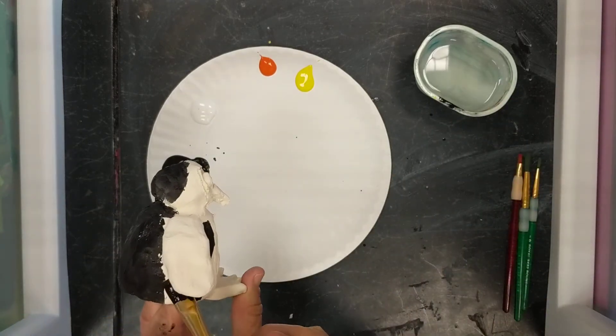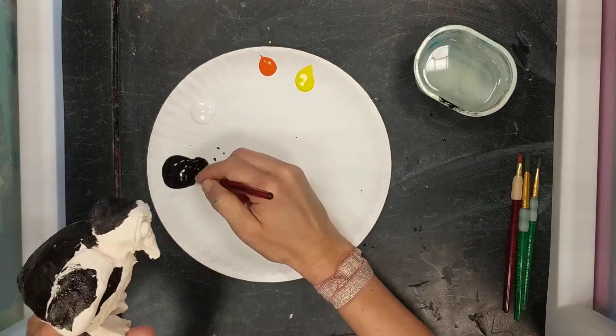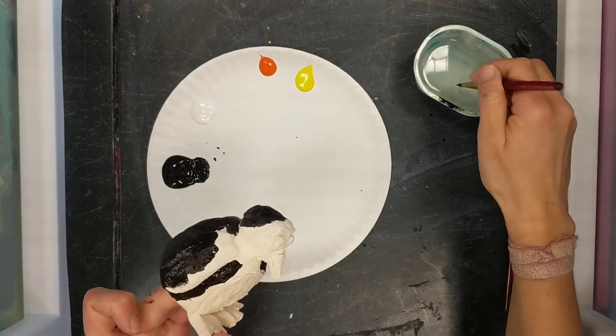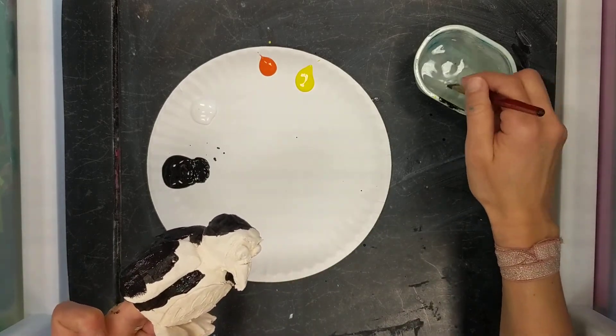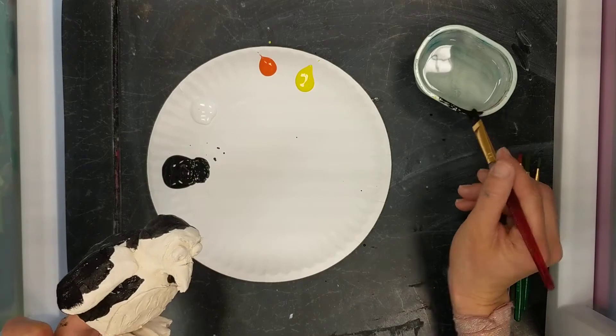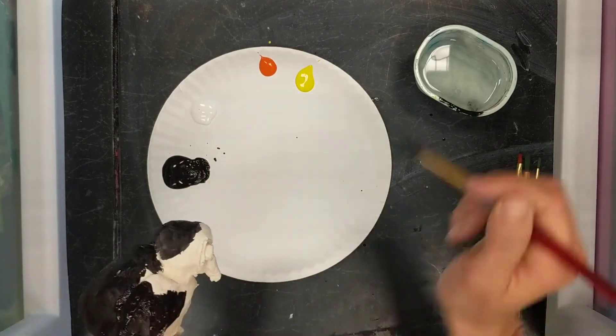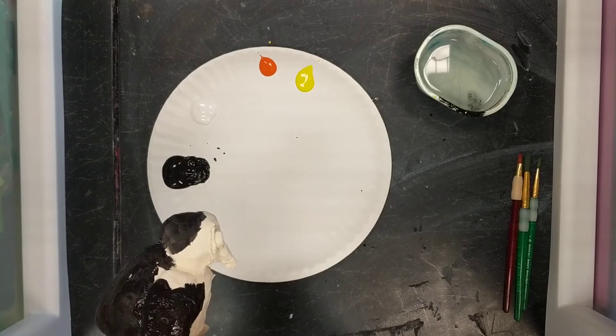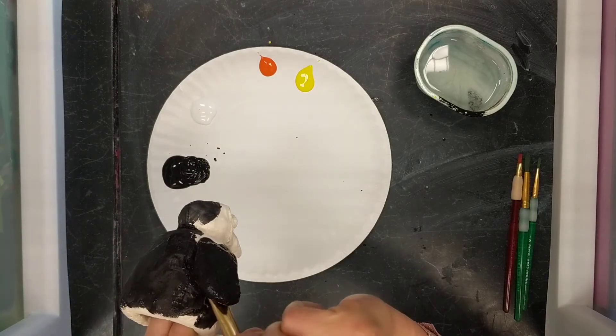So once this is all painted, and you can see I'm constantly dipping in the paint and a little bit in the water. But when I go in the water, I go dip, wipe, swipe. So I'm dipping, I'm swiping, I'm wiping to get more paint on there.